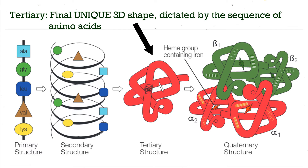The tertiary structure of a protein refers to the final 3D shape of the polypeptide caused by the way the chain folds up after secondary folding. This unique 3D shape is the result of the unique sequence of amino acids it contains, and as I will show later, it is the special 3D shapes of proteins with their unique folds, grooves and clefts which determines the function of proteins.